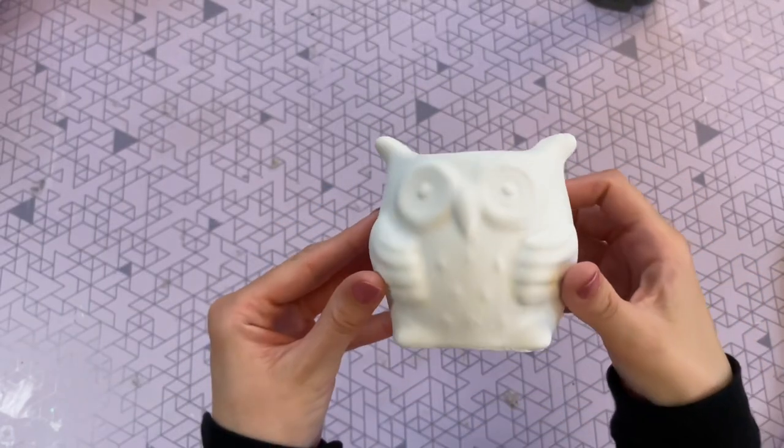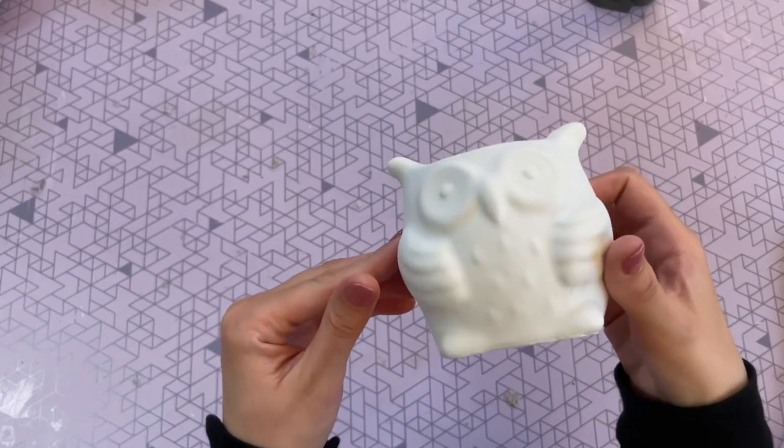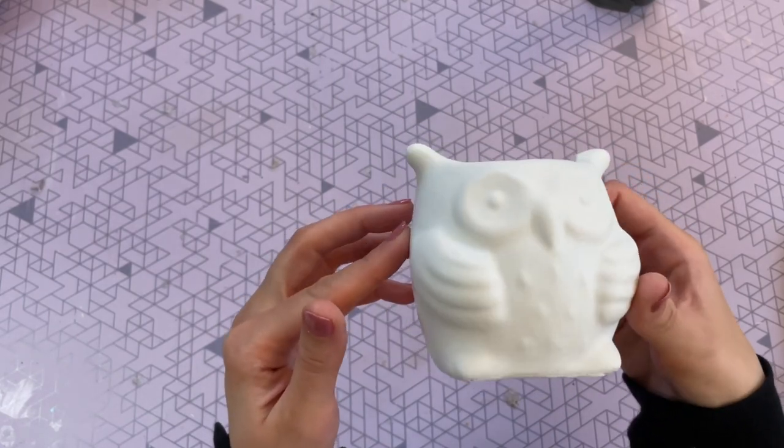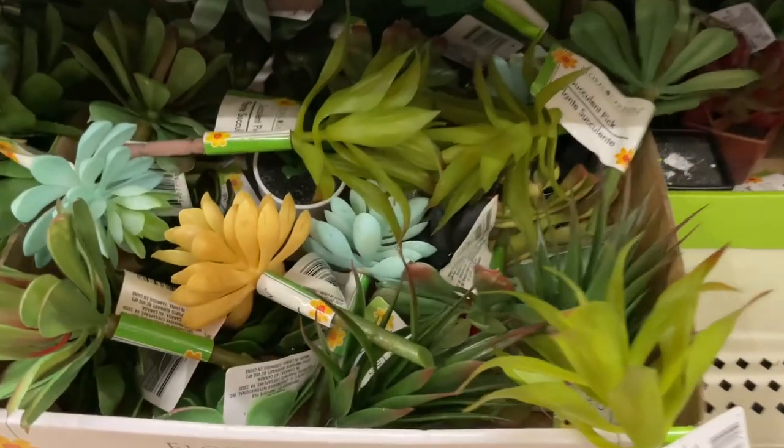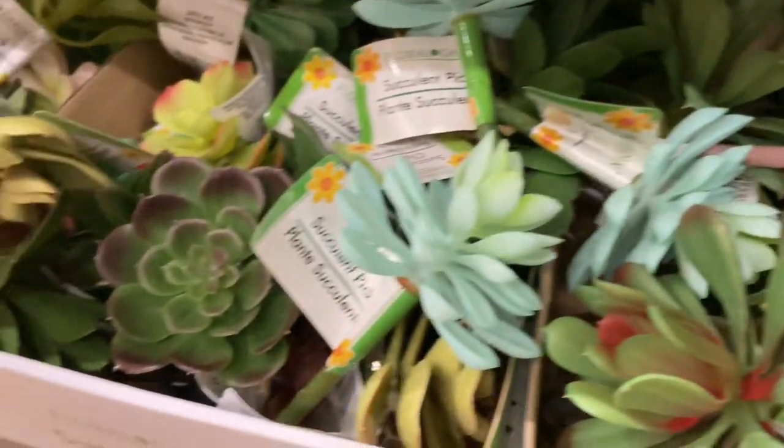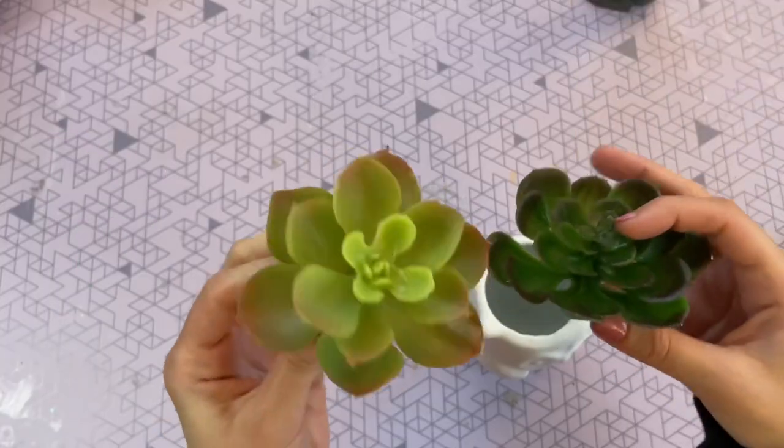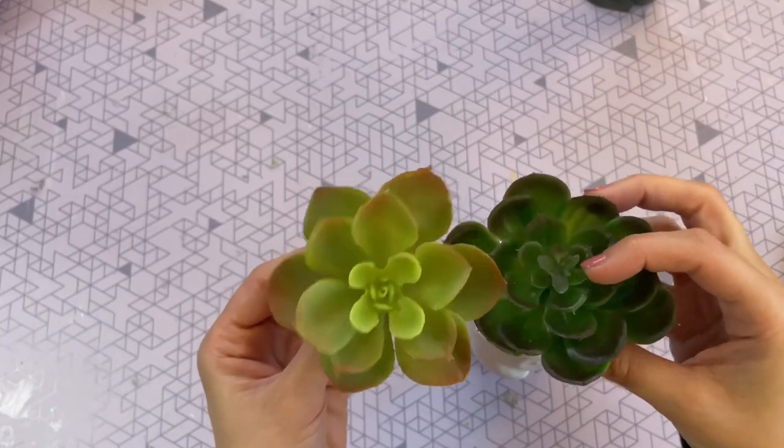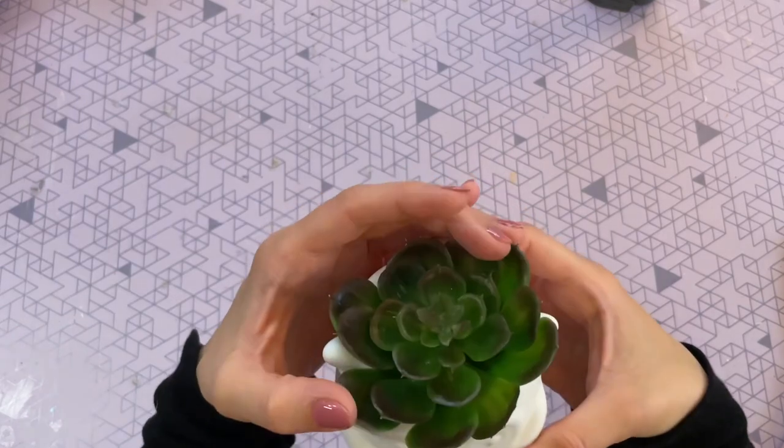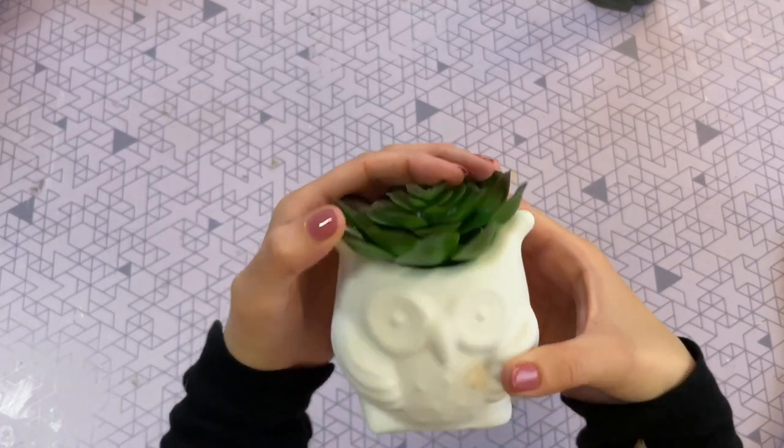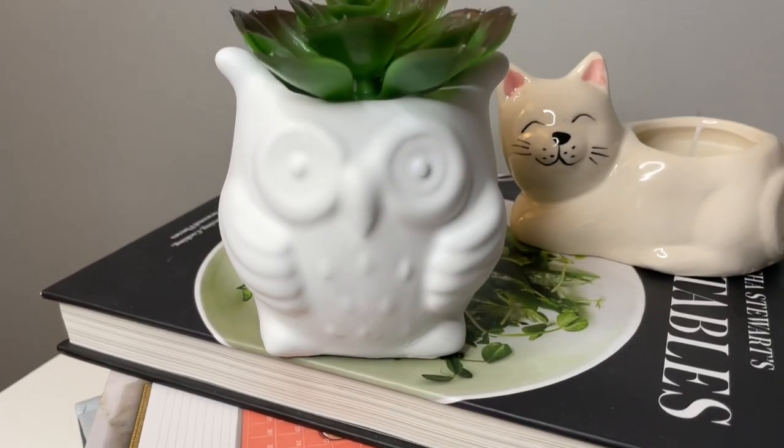And now my owl is all dry, so to turn them into a planter, I'm going to take the super easy route today and actually just add a faux succulent. So Dollar Tree has a bunch of these to choose from. They're really, really nice quality for $1.25. Some of them have the stem, other ones just have the clip. So you can just glue this in place or just lay it on top. And that's what I did here.